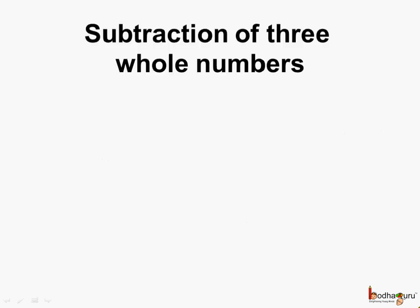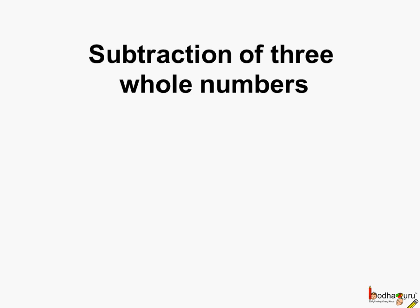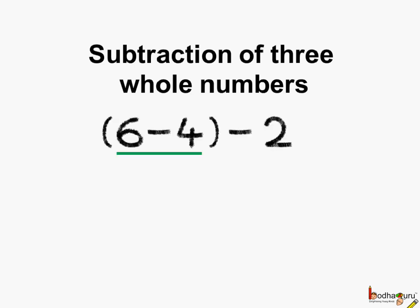First, let us try to subtract three whole numbers. What is 6 minus 4 minus 2? We can do it in different ways. While subtracting three or more whole numbers, we can subtract them in different ways by grouping them differently.